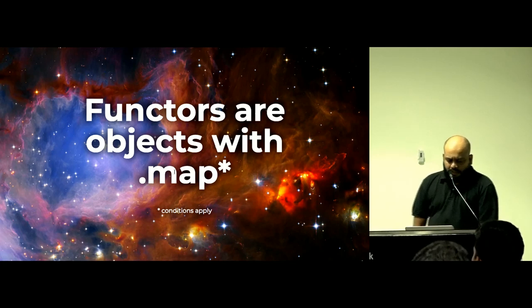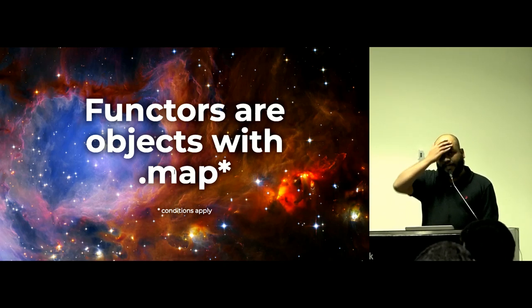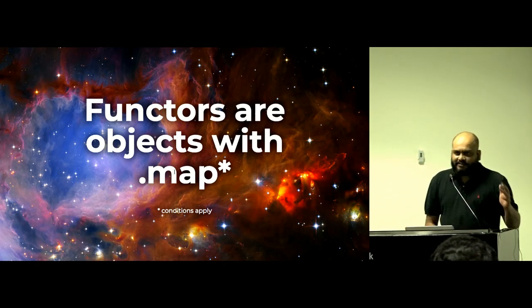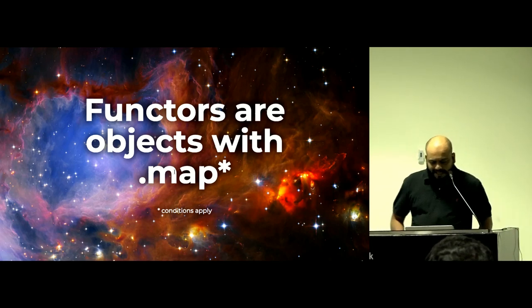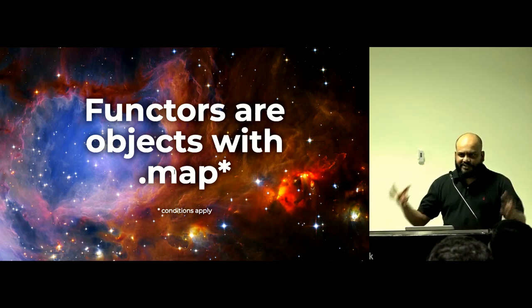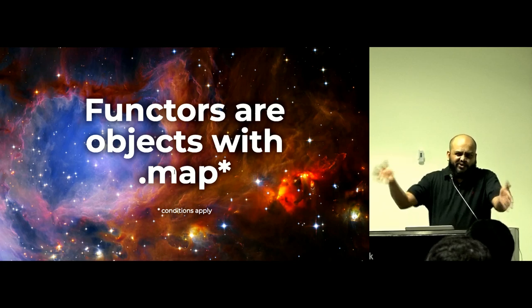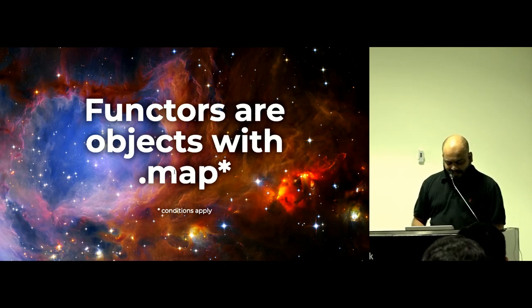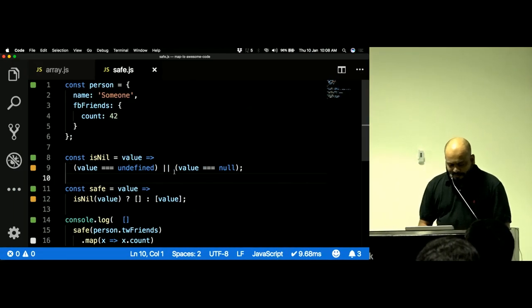It's called a functor. A functor is an object that has `.map()` on it. If you've come across this term and thought it was confusing, that's because people don't know how to explain it — this is all there is to it. Conditions apply: there are rules about how `.map()` works — for example, it has to return the same container type — but overall the idea is simply an object with `.map()` on it.